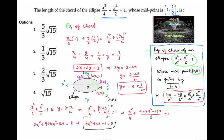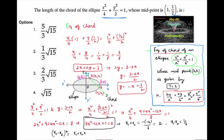This is a quadratic equation in x. Let x1 and x2 be the roots. Sum of roots x1 + x2 = 12/6 = 2, and product of roots x1·x2 = 1/6. Therefore (x1 - x2)² = (x1 + x2)² - 4x1x2 = 4 - 2/3 = 10/3, so x1 - x2 = √(10/3).